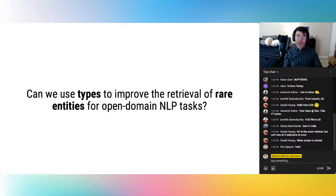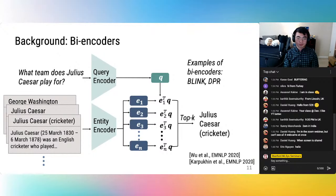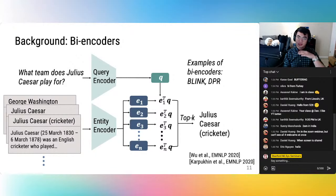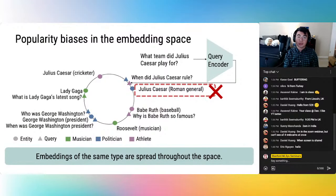The key question in our work is: can we use types to improve the retrieval of rare entities for open-domain NLP tasks? Our method builds on recent bi-encoder models for entity retrieval. A bi-encoder consists of a query encoder and an entity encoder — the query encoder encodes the question, and the entity encoder encodes all the different documents that might answer the question. Both produce embeddings, and at test time you use nearest neighbor search to retrieve the closest entity embeddings to your query embedding. Bi-encoders are often trained contrastively by forming positive pairs over queries and the right entity to answer the query.